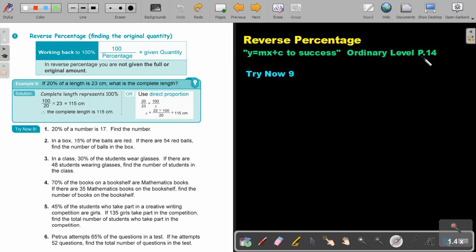Reverse percentage. You will find this on page 14 in the Namibia Mathematics Ordinary Level Textbook, Y equals MX plus C to success. Reverse percentage, finding the original quantity. Working back to 100%. So basically I will put the 100 on top over the percentage given and I will multiply it by the given quantity. Very important. In reverse percentage you are not given the full or the original amount. You must find the full or the original amount.